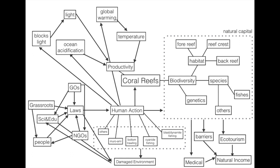All of these human actions that have negative impacts on the environment damage both the productivity and the biodiversity. These actions can create ocean acidification, which is a reduction in the pH of the ocean over an extended period of time, caused primarily by uptake of carbon dioxide from the atmosphere.